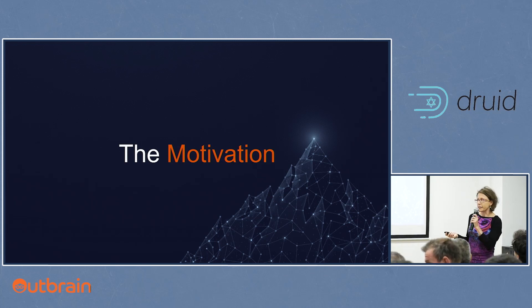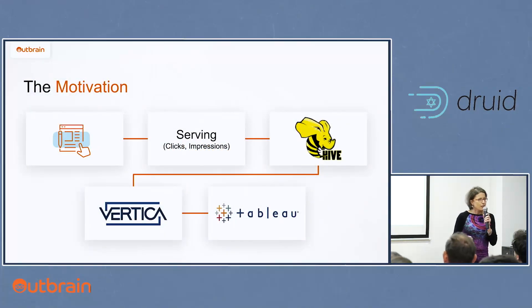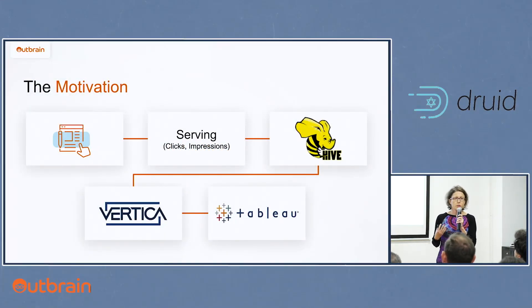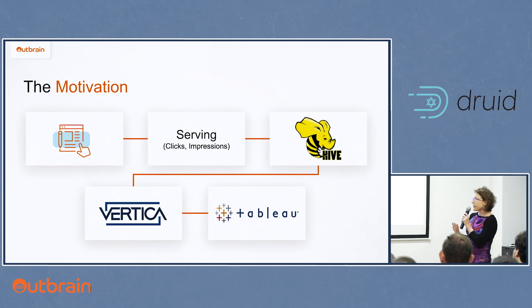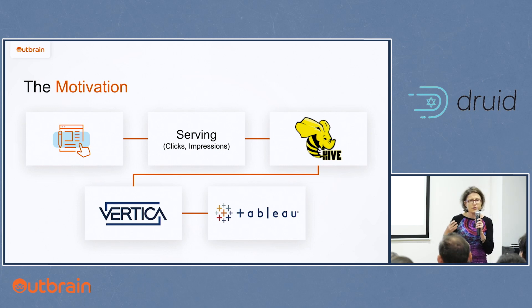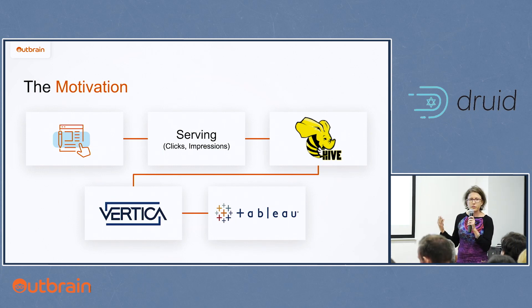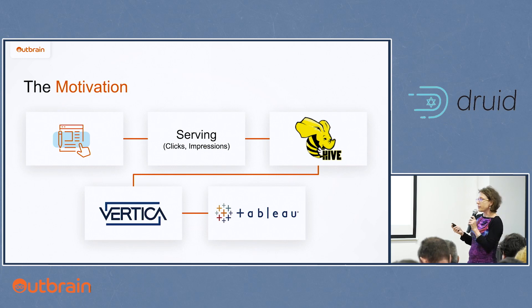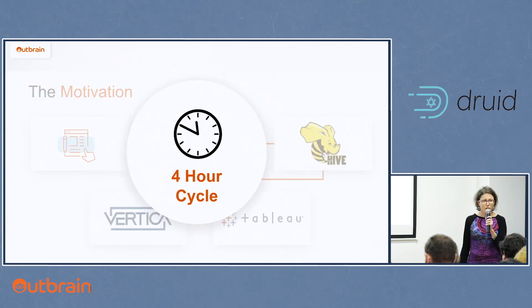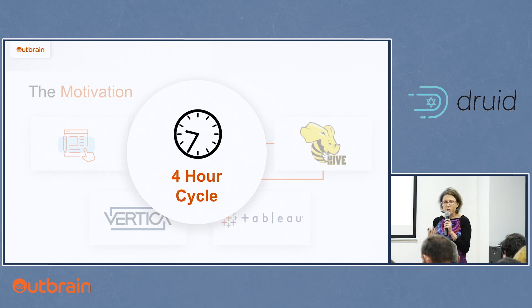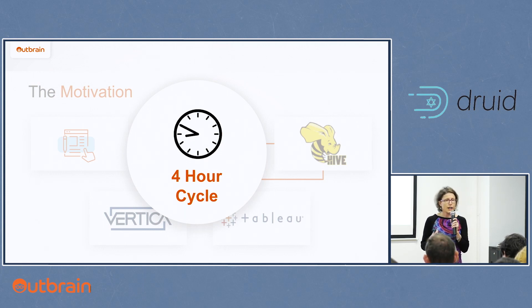The motivation for real-time analytics: while serving recommendations, our services produce a lot of data. For example, we collect all clicks and impressions. First they go to Hadoop and Hive, then there are many aggregation and ETL processes that aggregate data from Hive in various ways and insert it into Vertica. Finally, we have business reports in Tableau. The problem is that this whole cycle takes about 4 hours.